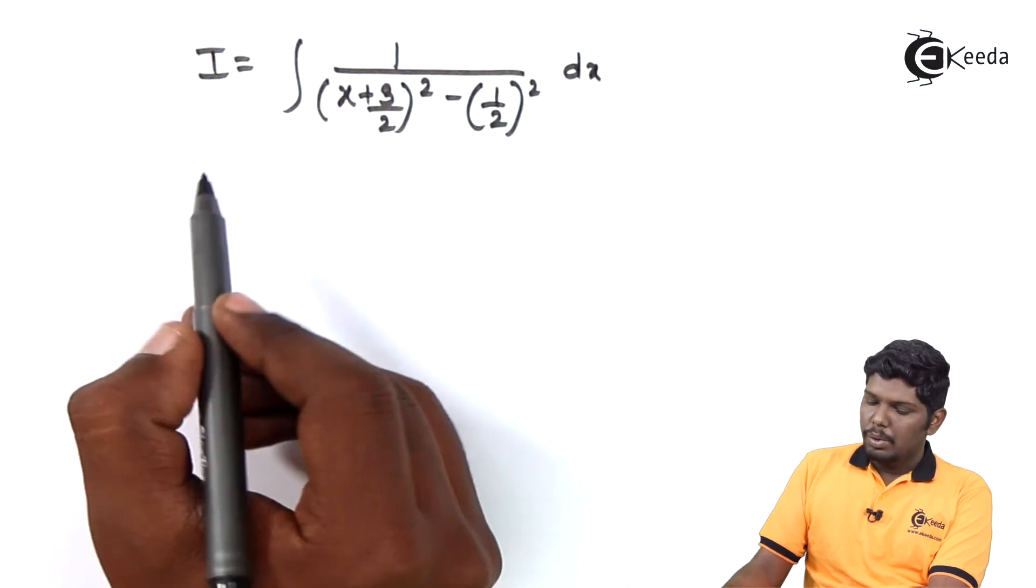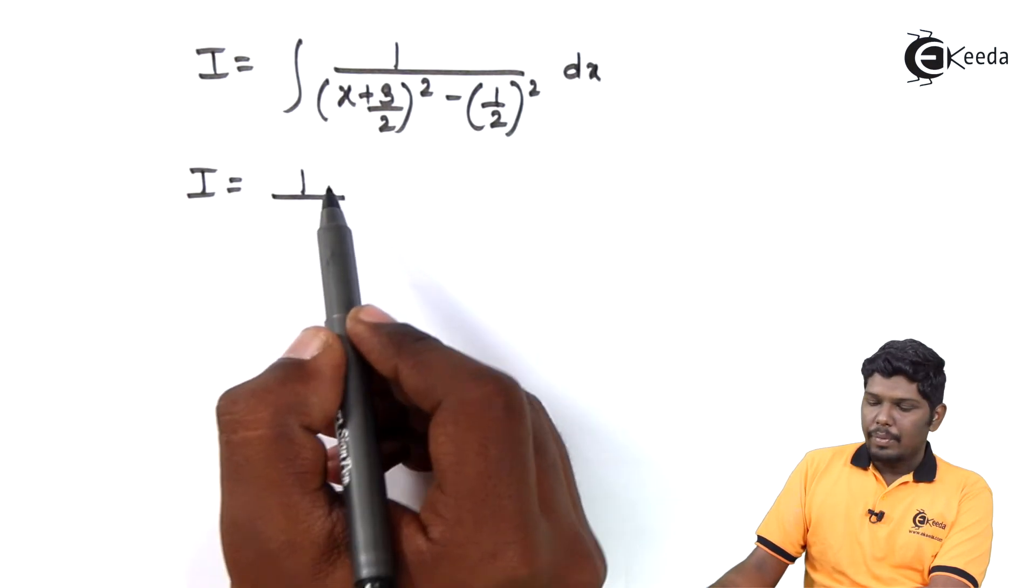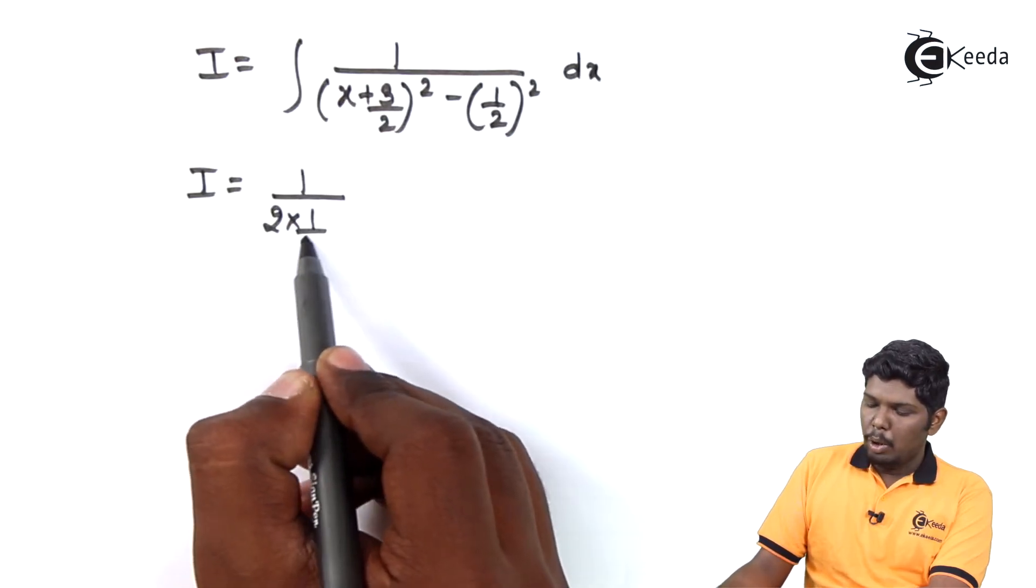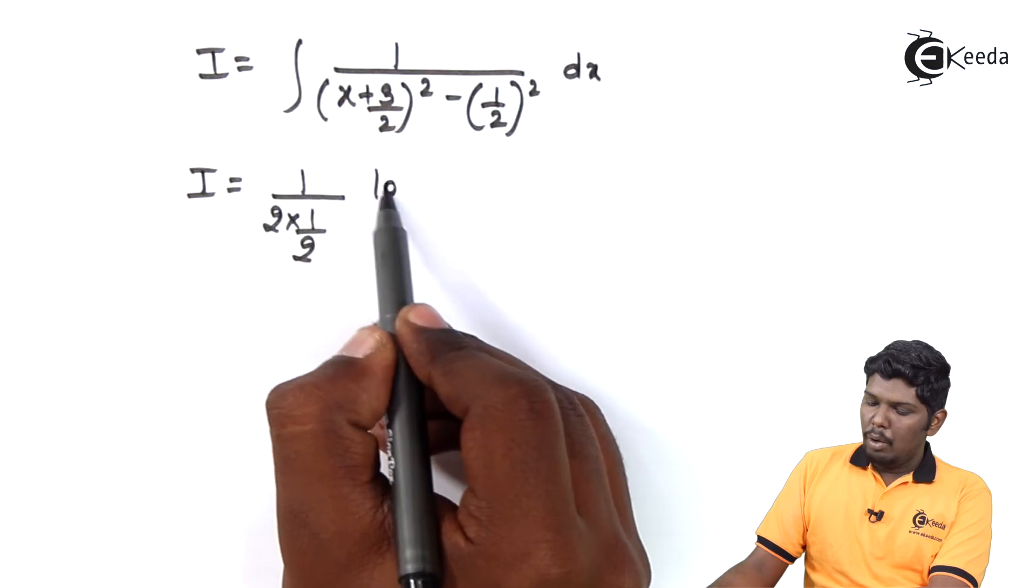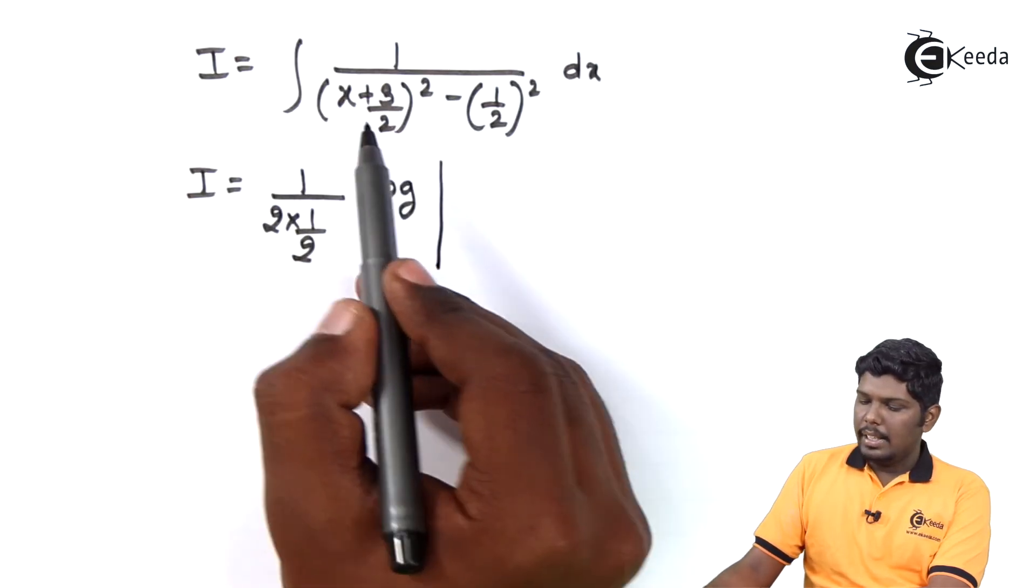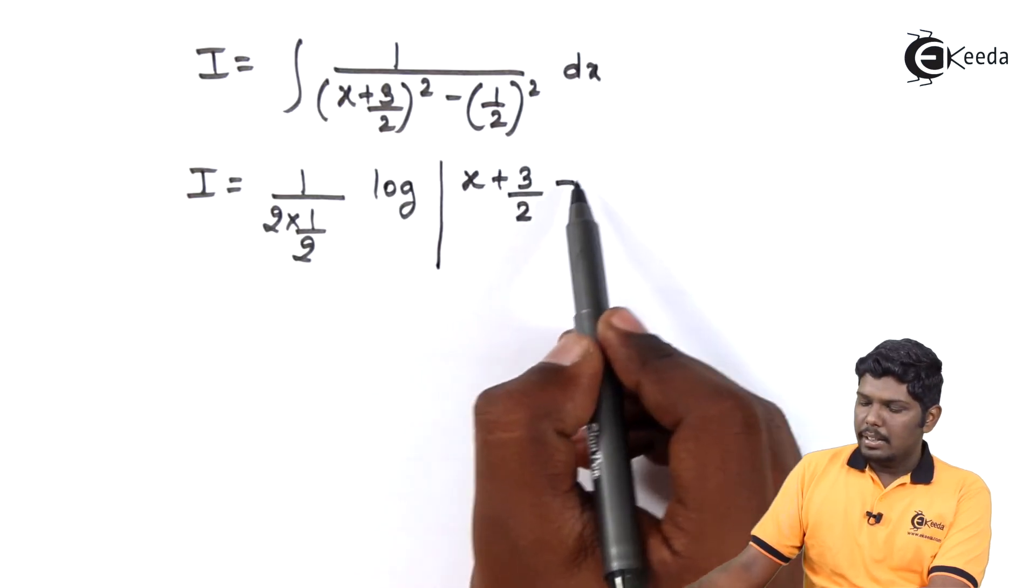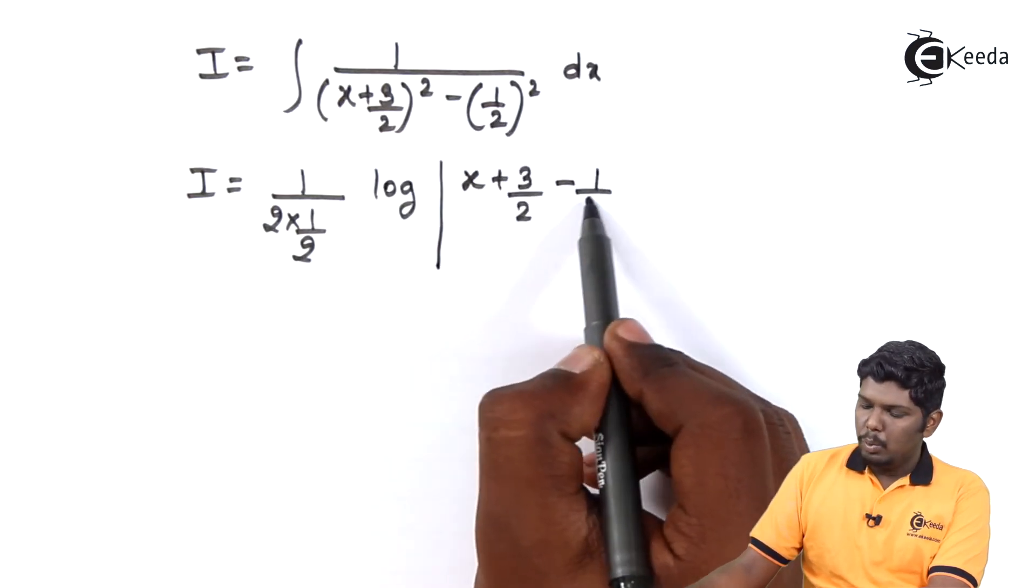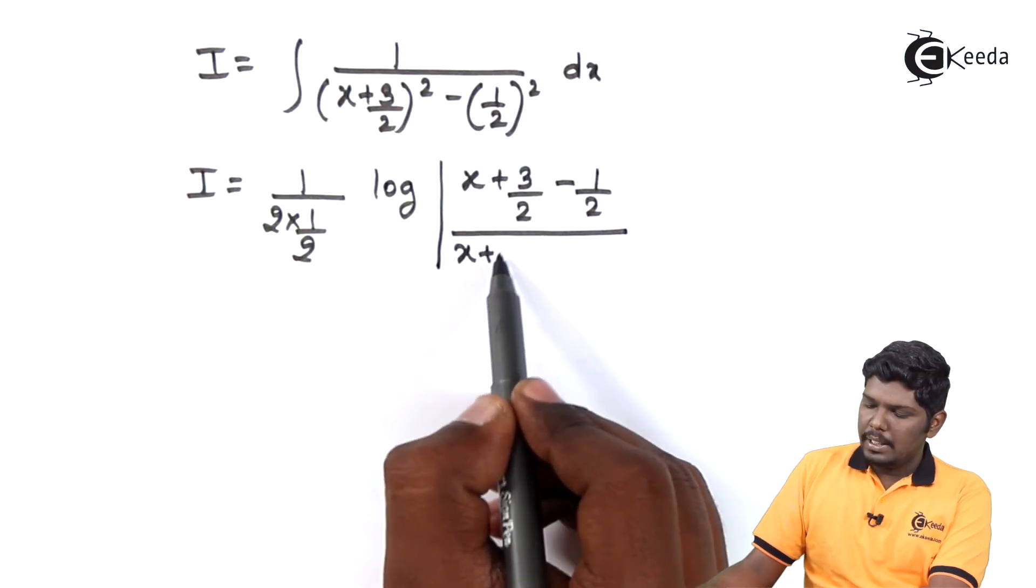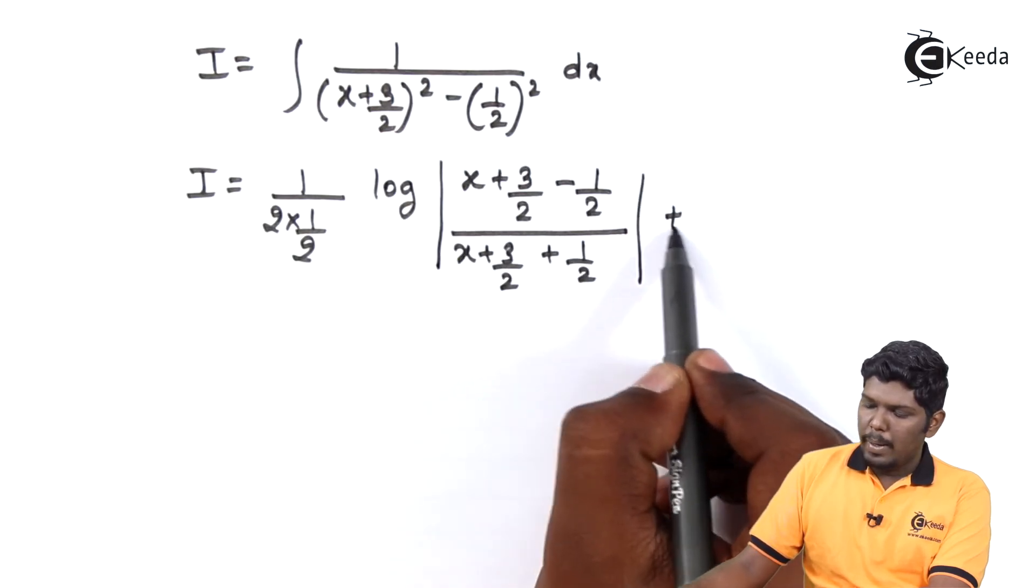That will give you I is equal to 1 upon 2a. The value of a is 1 by 2, so it is 2 into 1 upon 2. Then we have log mod x minus a. x is our x plus 3 by 2, minus a is 1 by 2, upon we have x plus a, that is x plus 3 by 2 plus 1 by 2, followed by plus c.